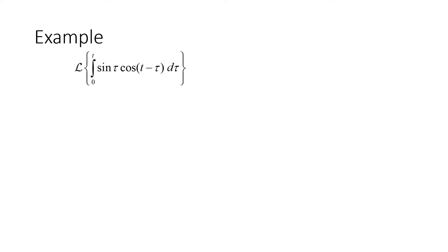Here's the second example. We want to find the Laplace transform of the integral from 0 to t of the sine of tau times the cosine of t minus tau with respect to tau. We could evaluate this integral directly and then take the Laplace transform, but if we want to use the convolution theorem, we need to rewrite this as a convolution.